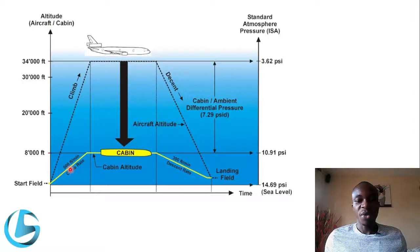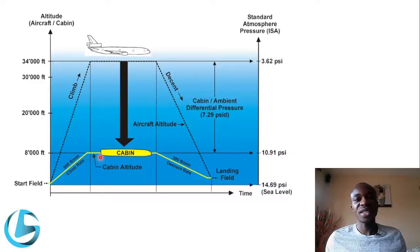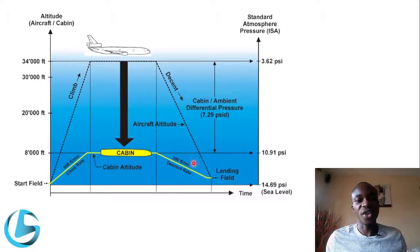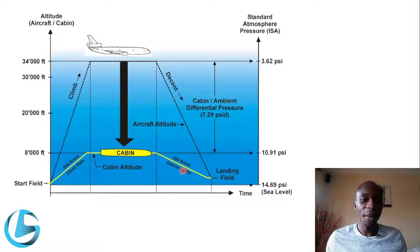The 500 feet per minute climb rate and 300 feet per minute descent rate requirements must not be exceeded. If the climb or descent rate is exceeded, passengers will start to experience discomfort around the ears. That is why a good pressurization system must maintain these rate limits.